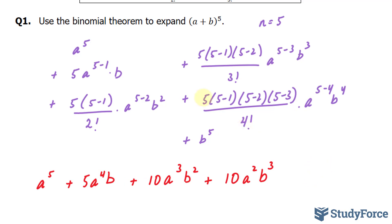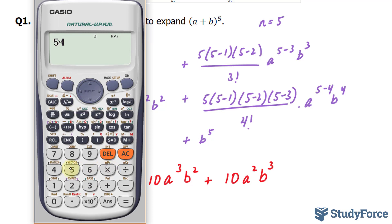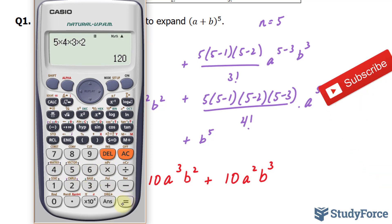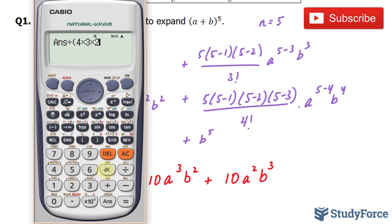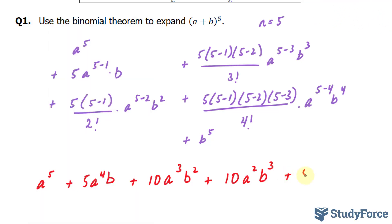Our next term is five times four times three times two. Let's use our calculator: five times four times three times two gives us 120, divided by four factorial — which is four times three times two times one — and we end up with five. Plus five, and this part simplifies to a, b to the power of four. And finally, our last term was b to the power of five.